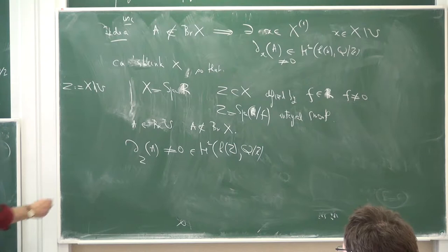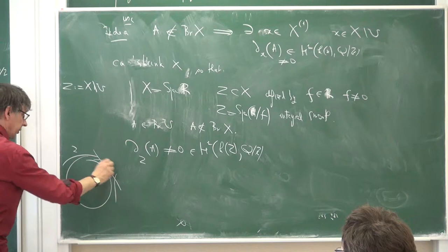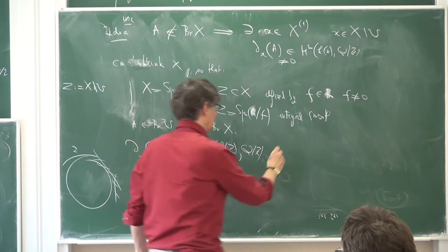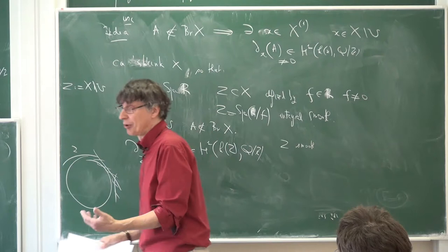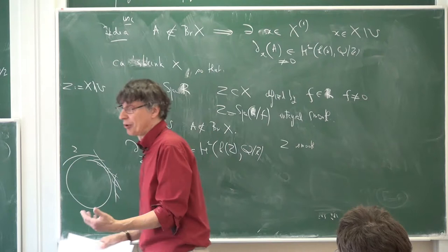Because Z is smooth, the residue ∂_Z(a) actually lies in H¹_ét(Z, Q/Z), a subgroup of H¹(k(Z), Q/Z). We may assume this. This argument works over any field of characteristic zero; at the end we'll use number fields. The residue is non-zero in H¹_ét(Z, Q/Z). This defines a cyclic covering of Z of some exponent r.